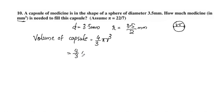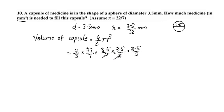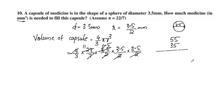Volume equals 4/3 into pi (22/7) into r cubed, where r is 3.5 divided by 2. So 4/3 into 22/7 into (3.5/2) cubed. Working through: 3.5/2 cubed, multiplying: 55 times 35 gives 25, plus 2 is 27, 53 is 15, 15 plus 1 is 16.